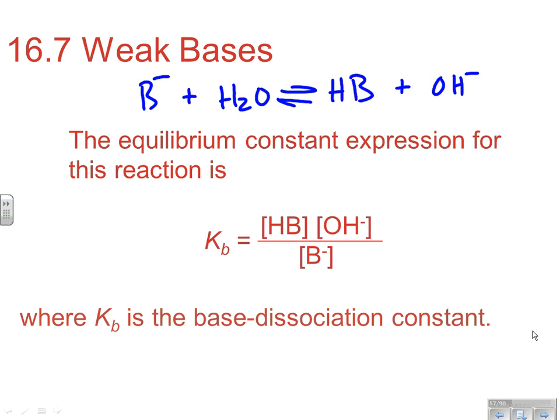The KB of that would be the concentration of HB, which in this case, since this is our base and this is our acid, this would be our conjugate acid and this would be our conjugate base. Now in this particular case, these are going to be aqueous. This is going to be a liquid, and that's also going to be aqueous. So when you write the general expression, we're going to end up with the concentration of HB times the concentration of OH- over the concentration of B-. Keep in mind, these two things are really going to be a base and their conjugate acid. So that's the general KB expression for any base reaction.